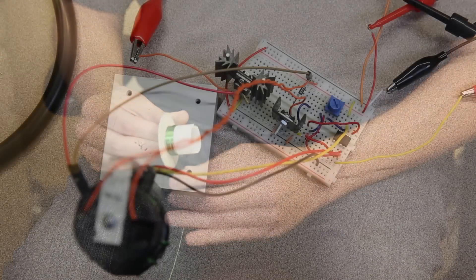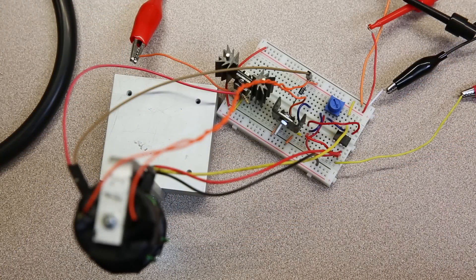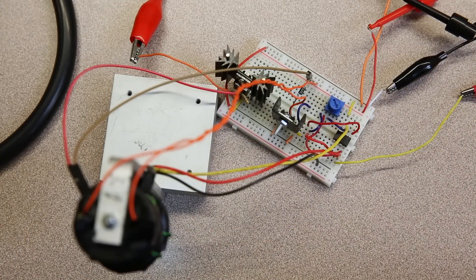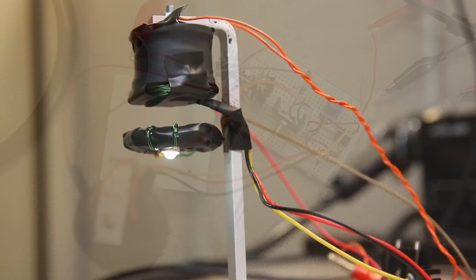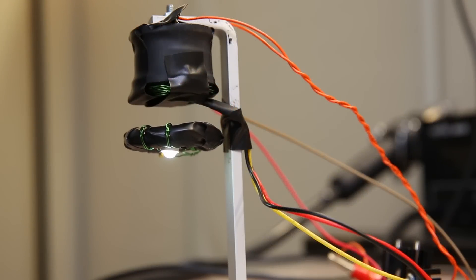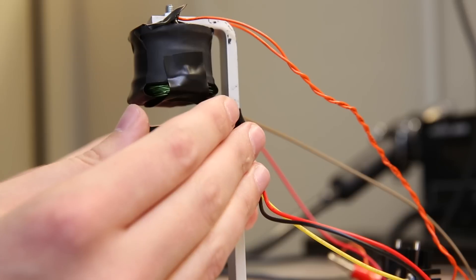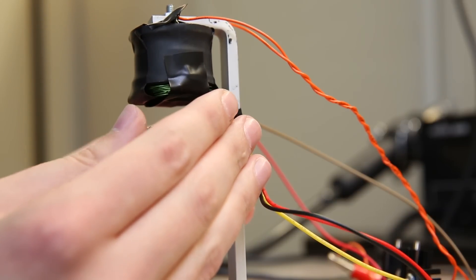I used an n-channel MOSFET connected to my function generator to switch current to this coil. By sweeping through the frequencies, I found the coil's resonance around 200 kilohertz. Finding the resonant frequency is important to maximize the power transfer.